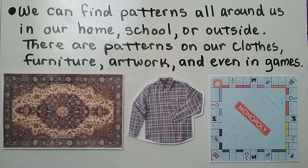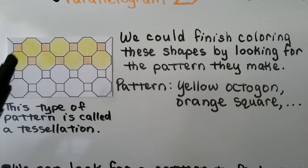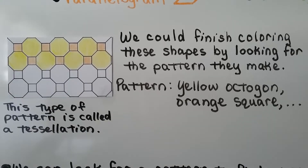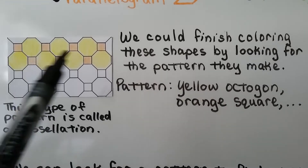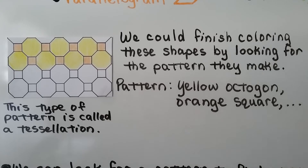We could finish coloring shapes by looking for their pattern. The pattern is a yellow octagon and an orange square taking turns. This type of pattern — where shapes fit together without gaps — is called a tessellation. By identifying what's happening with the yellow octagons and orange squares, we can finish coloring it.